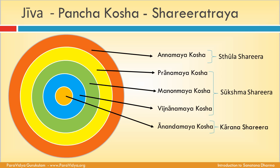Jeeva, Panchakosha, and Shariratraya: Annamaya Kosha is the Stoola sharira (physical body). Pranamaya Kosha, Manomaya Kosha, and Vijnanamaya Kosha together constitute the Sukshma sharira. Anandamaya Kosha is the Karana sharira.